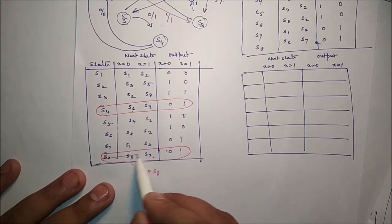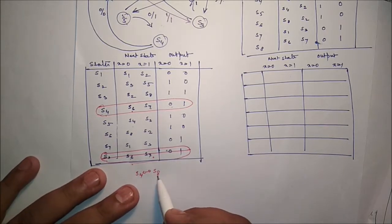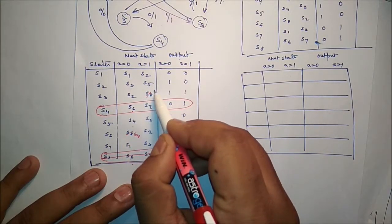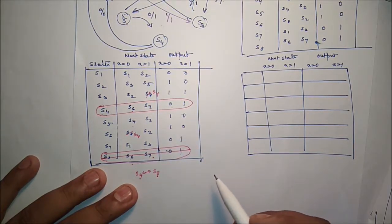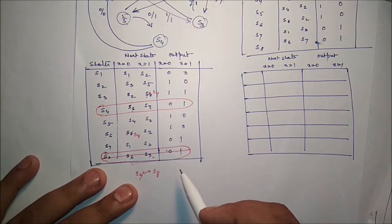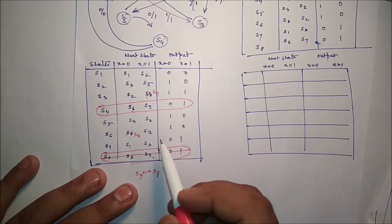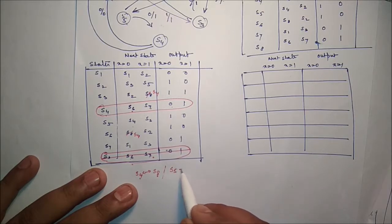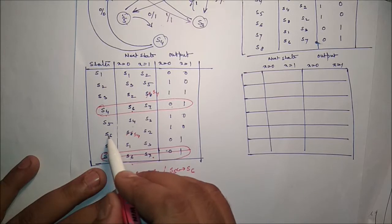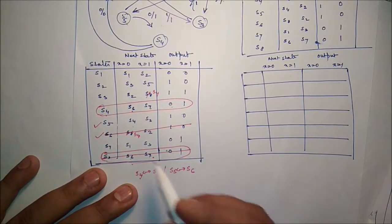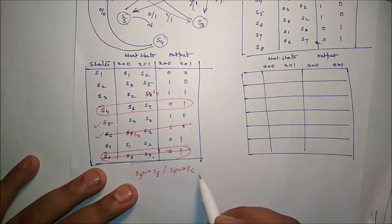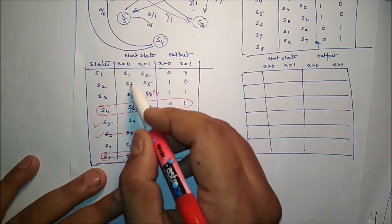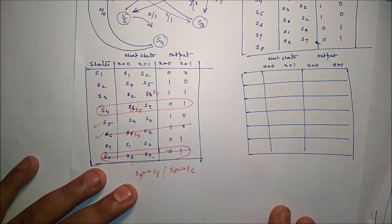Since S4 and S8 are equivalent, we can remove S8. Wherever S8 appears, we replace it with S4. After replacing all instances of S8, we check for any other equivalent states. Looking at the updated table, S5 and S6 have next states S4 and S2 respectively, with the same outputs — so S5 and S6 are equivalent. We can remove S6, replacing all occurrences of S6 with S5.